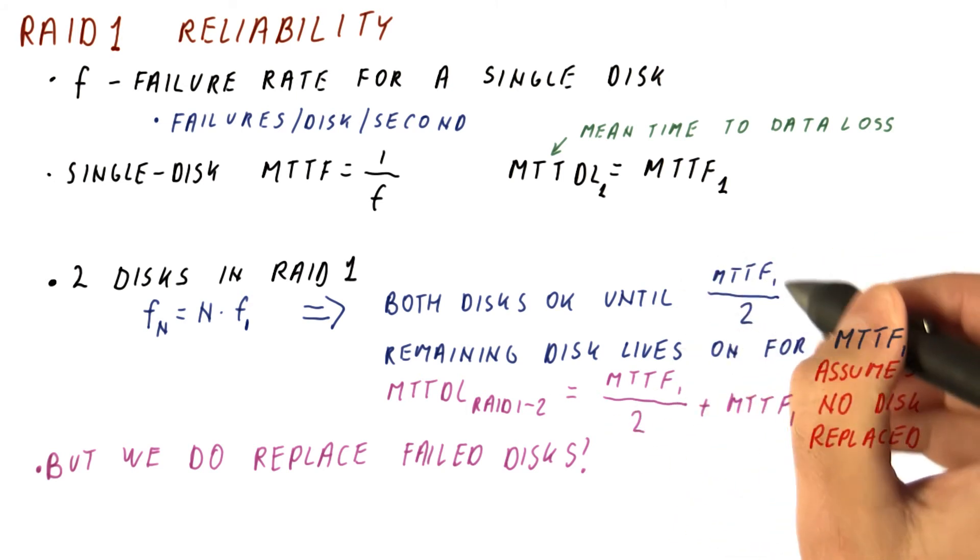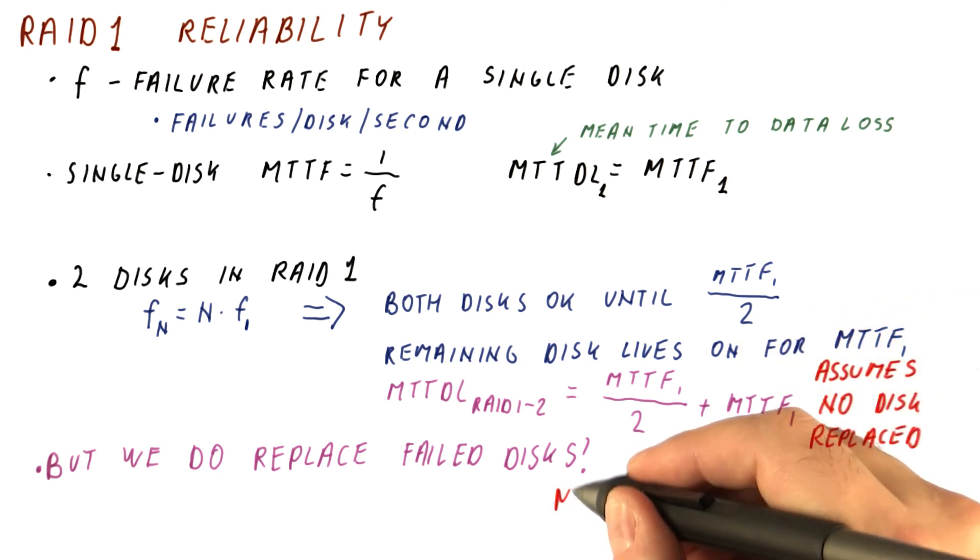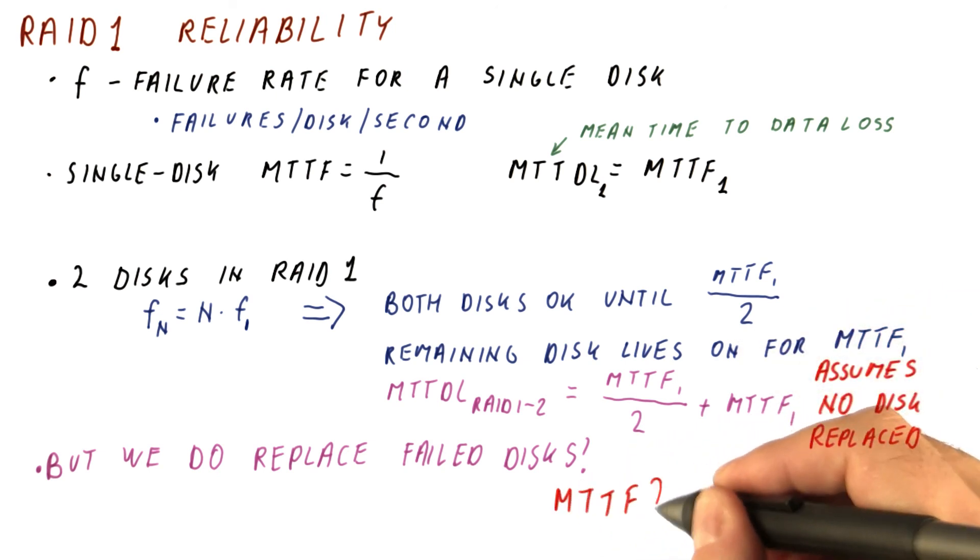But remember that when we want reliability, we definitely will replace the failed disks. So when we have the first failure, we will, as soon as possible, replace that failed disk, copy the data from the working disk to it. So now we're back to RAID 1 working properly. So what's the MTTF for that?